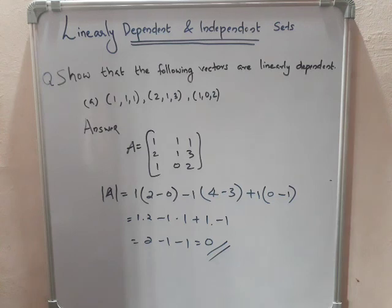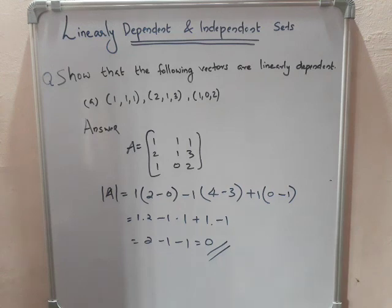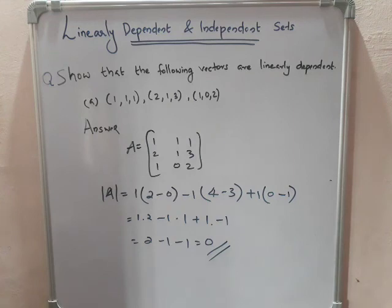The answer is zero. Determinant is equal to zero. That is a linearly dependent set. Now, to summarize the method: if lambda equals zero, it is linearly independent; if the determinant equals zero, it is linearly dependent. If the determinant is not equal to zero, it is linearly independent.